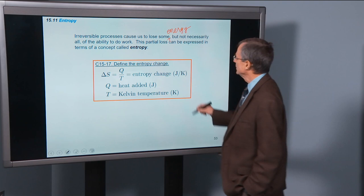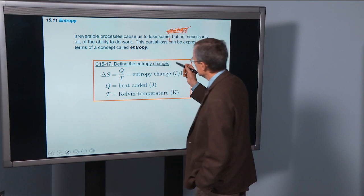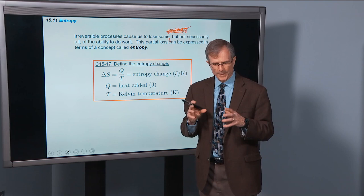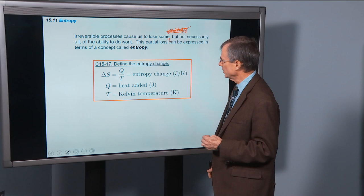I'm sorry, this statement is actually correct as written. Irreversible processes cause us to lose some but not necessarily all of the ability to do work. So this friction, things that are irreversible, cause losses in the system. And this partial loss can be expressed in terms of a concept called entropy.